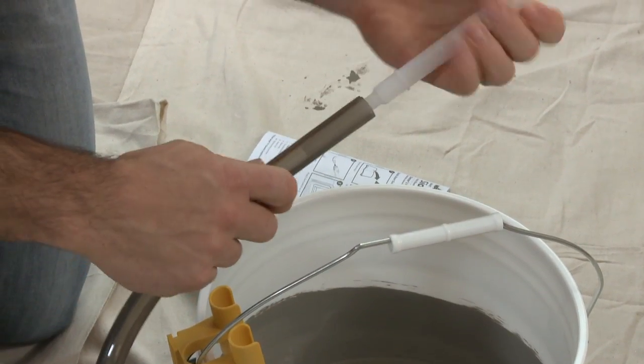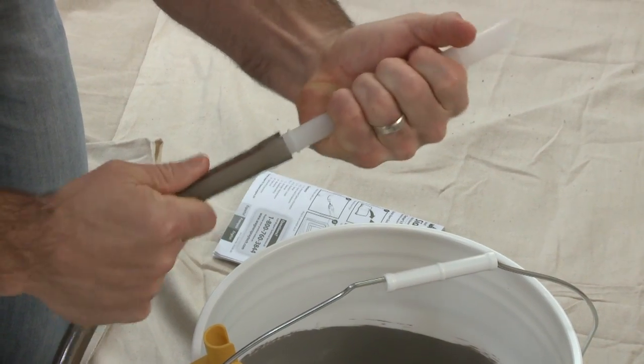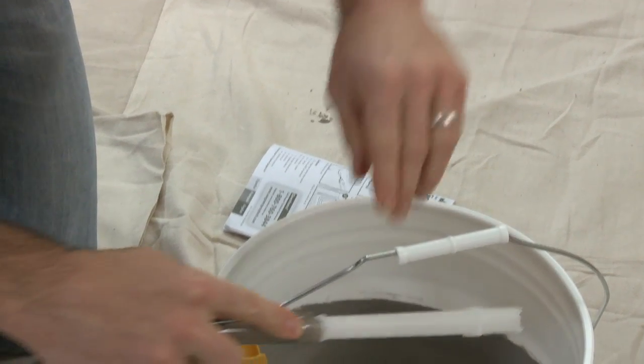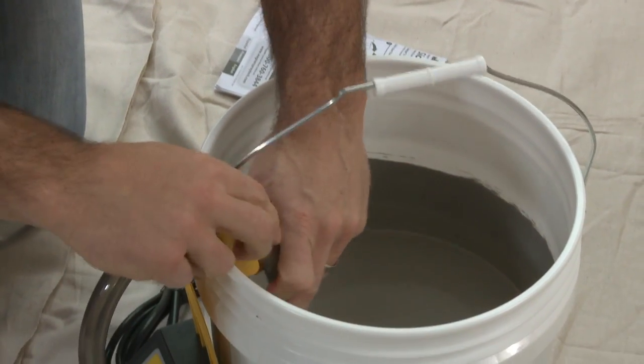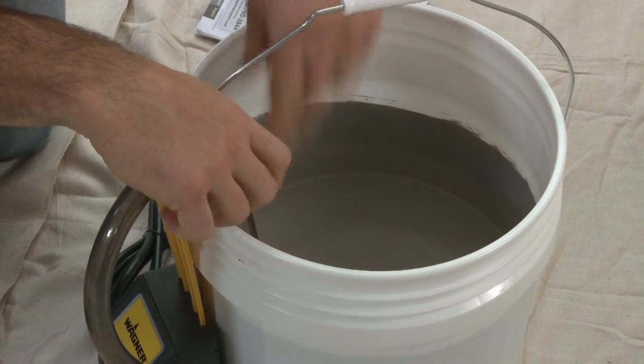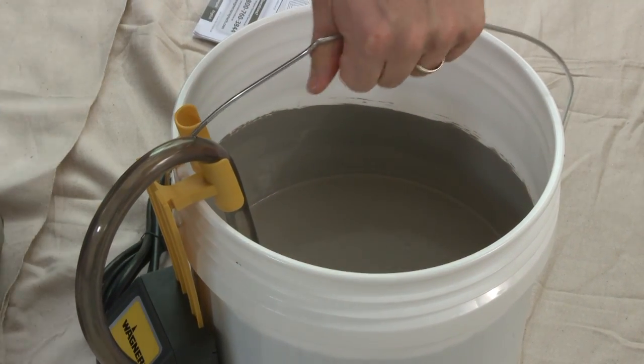If you're using a container larger than one gallon, you will need to insert the white extension tube. Slide the smoke colored suction tube down until it touches the bottom of the container. Now you're ready to begin painting with the Sidekick.